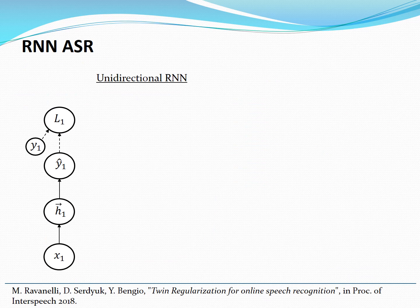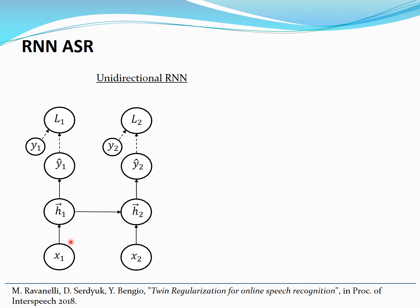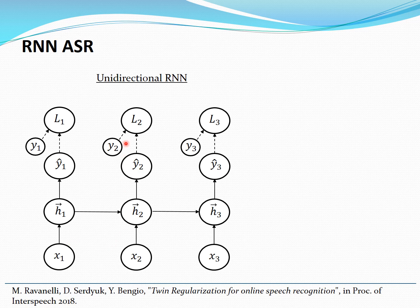A popular approach to process speech for speech recognition is to use recurrent neural networks. In recurrent neural networks we have our input features, we process them with one or more hidden layers, we estimate some posterior probabilities, and then we compute a loss function from which we can backpropagate a gradient. The structure is replicated at every time step, and at time step n the hidden state depends on all the previous elements of the sequence.